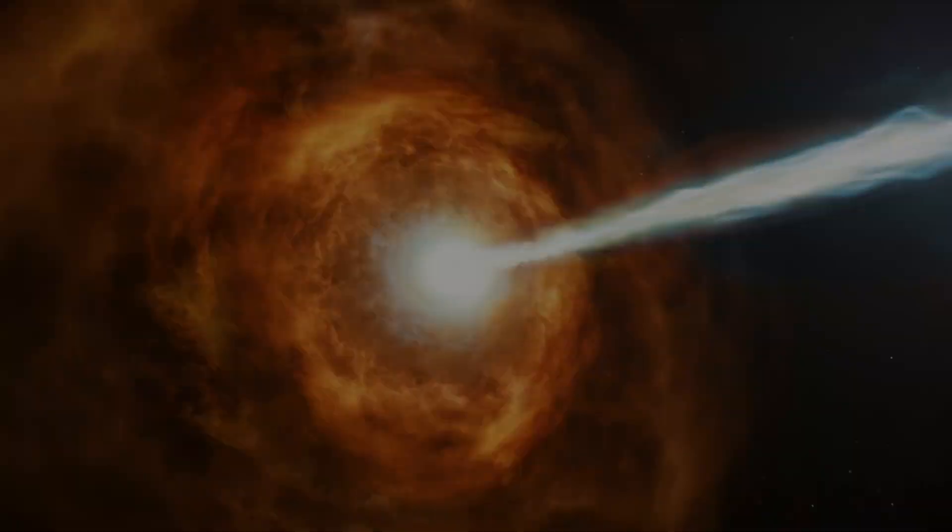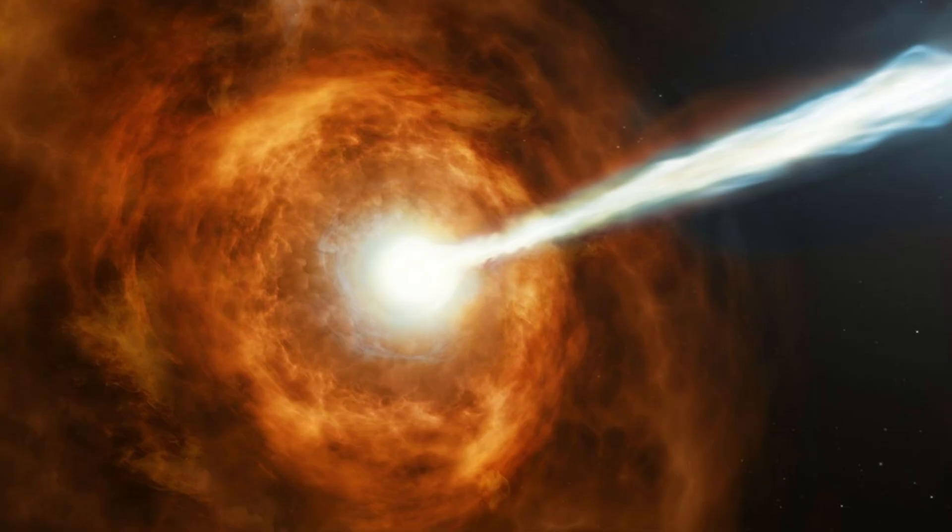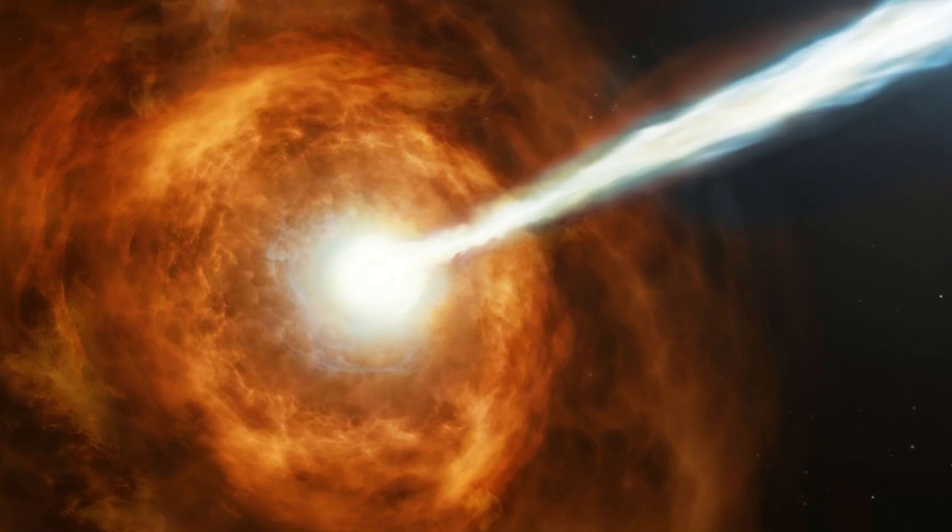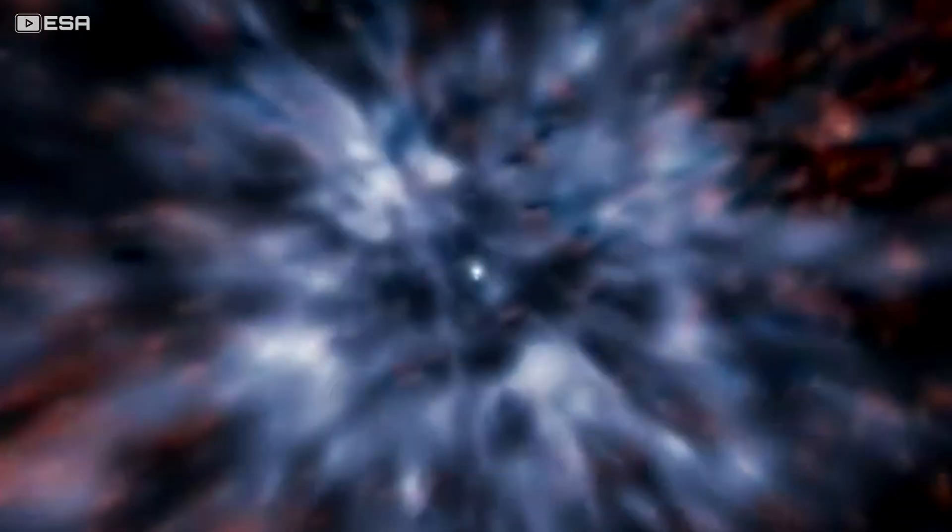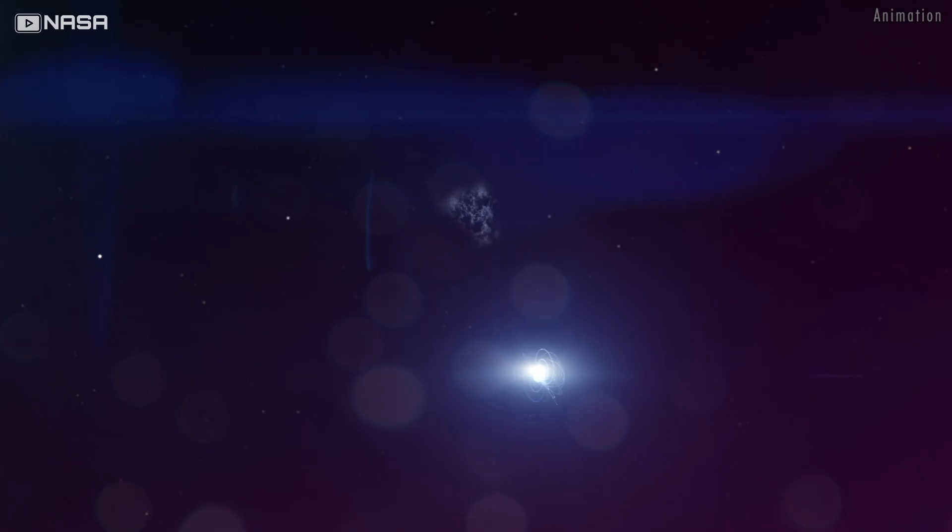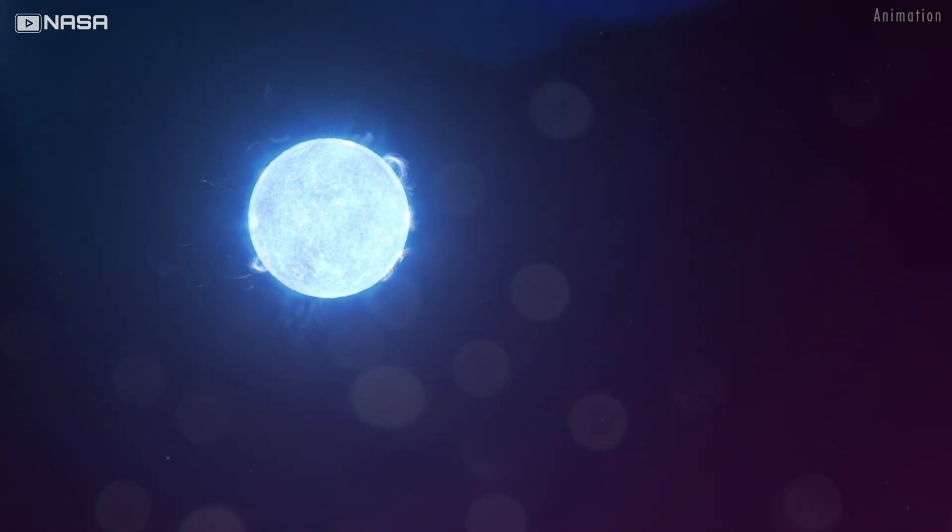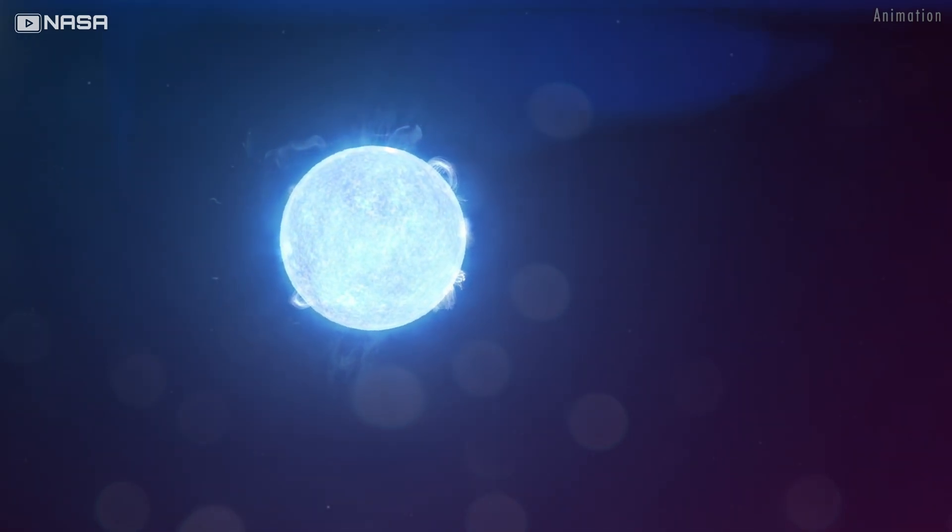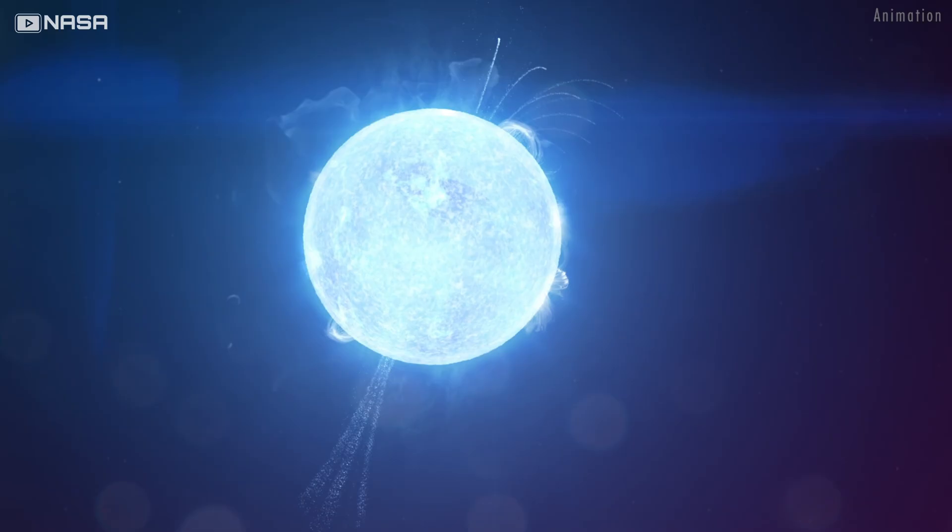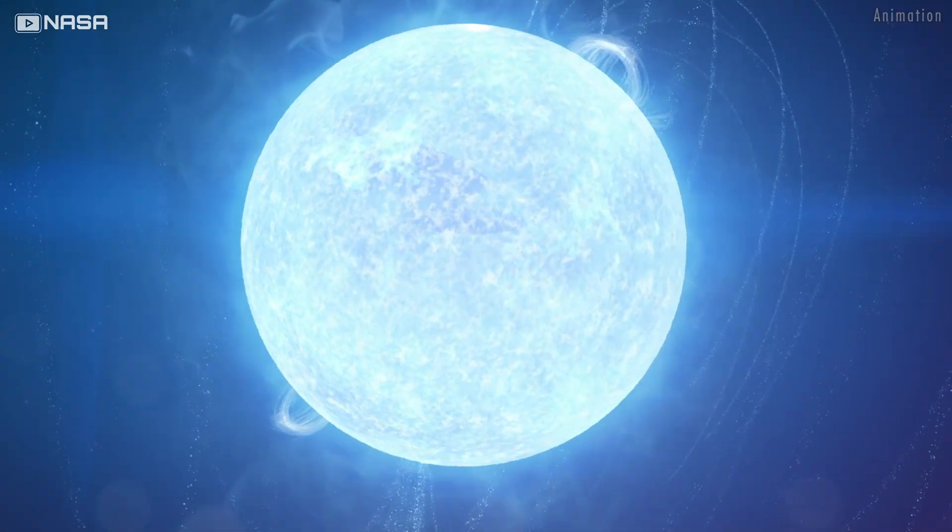If light were sound, a GRB would be a scream loud enough to shatter galaxies. At its peak, a single collapsing star can outshine every other star in the Milky Way combined. Think about that. One dying object, outshining 200 billion suns. And still, that's small next to the engines that never stop.